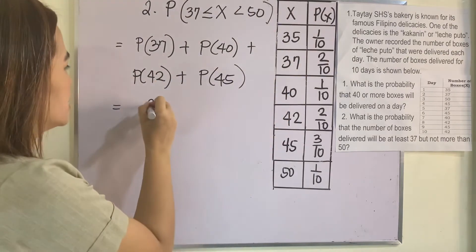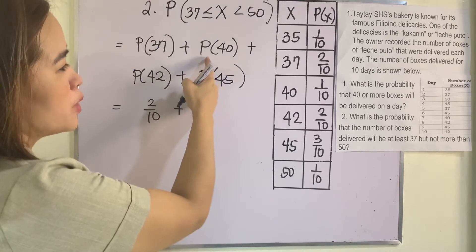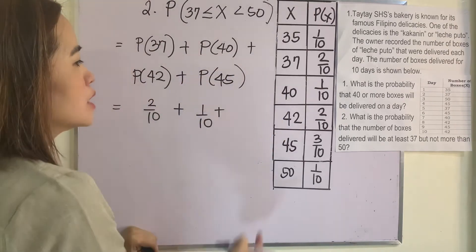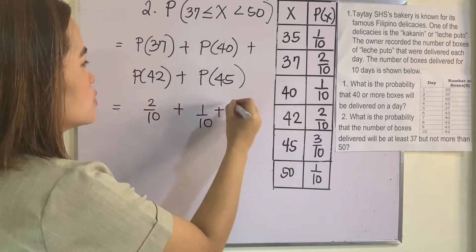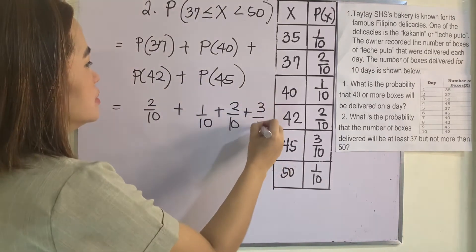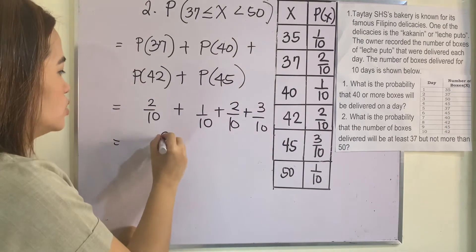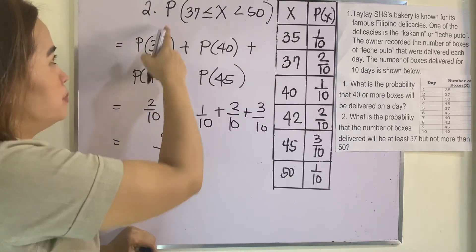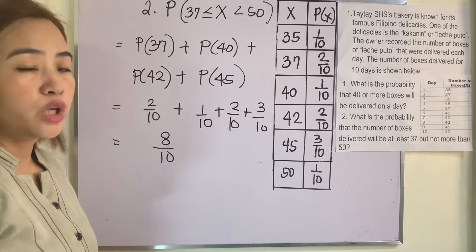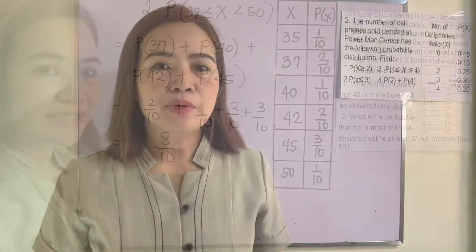The values from 37 up to but not including 50 are 37, 40, 42, and 45. So P(37 ≤ X < 50) = P(37) + P(40) + P(42) + P(45) = 2/10 + 1/10 + 2/10 + 3/10. Adding the numerators: 2 + 1 + 2 + 3 = 8, so the answer is 8/10.